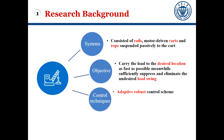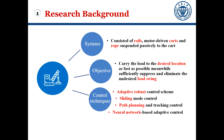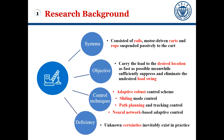Many control techniques have been proposed for under-actuated crane systems in the literature, such as adaptive advanced control, sliding mode control, path planning and tracking control, and neural network-based adaptive control. However, unknown uncertainty inevitably exists in practice, and when system parameters are unknown, variable changes cannot be performed for the control design.